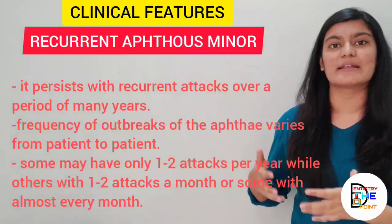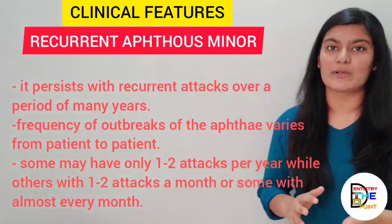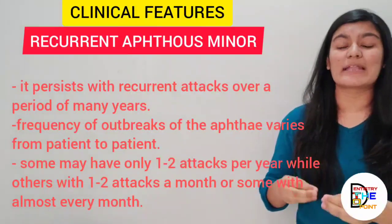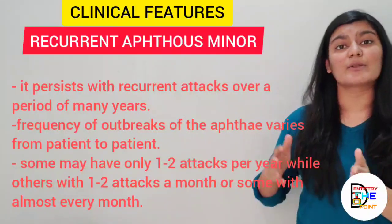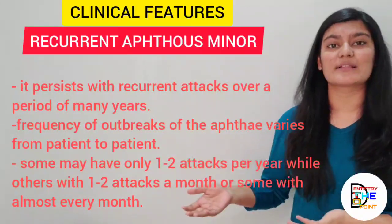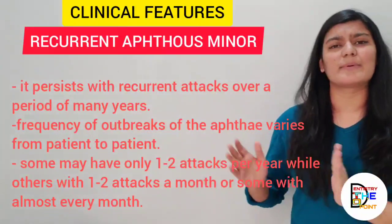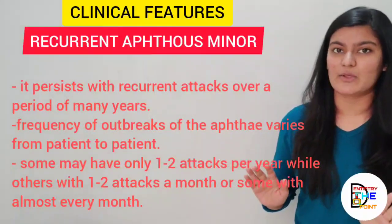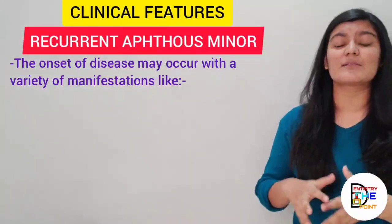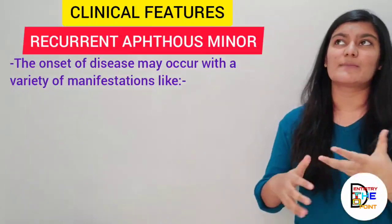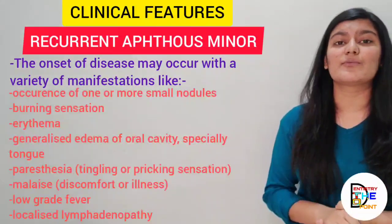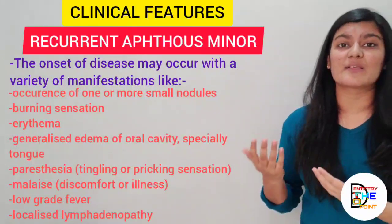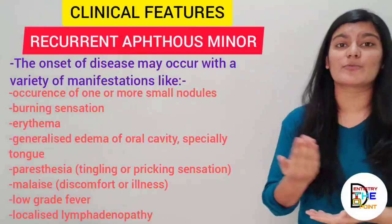Since the name includes 'recurrent,' this disease obviously has recurrent attacks. These vary from person to person — some may have one or two attacks in a year, some may have one or two attacks in a month, and some may have several attacks within a month. There is no specific episode pattern. There is also an occurrence of a variety of manifestations: one or more small nodules with burning sensation, erythematous patches, or edema of the oral cavity.